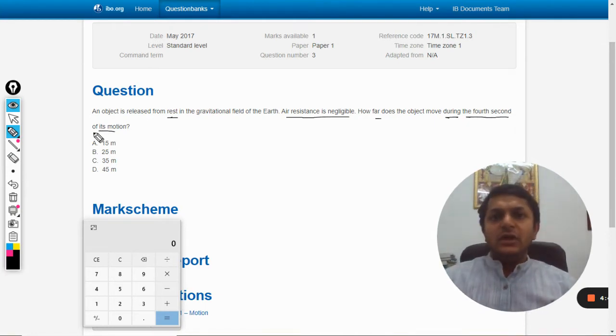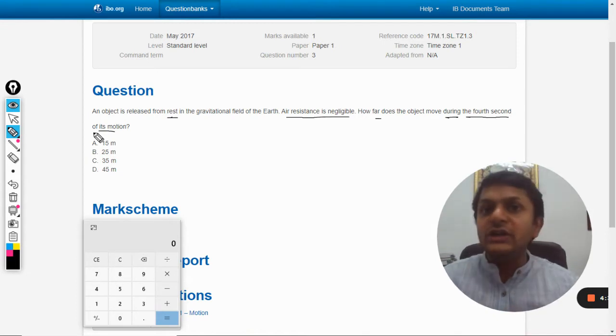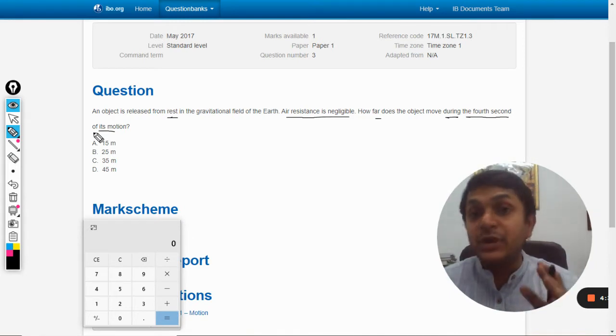He is not talking about the total distance traveled by the body in four seconds. He is talking about the distance traveled particularly in the fourth second. So how to do that?